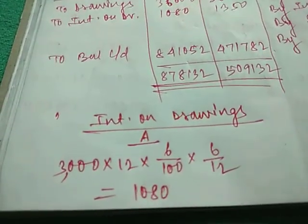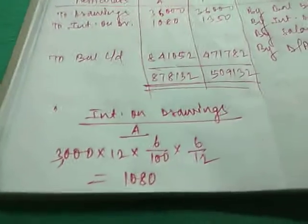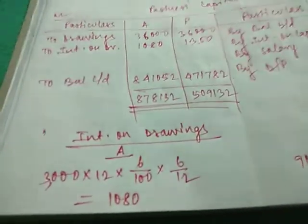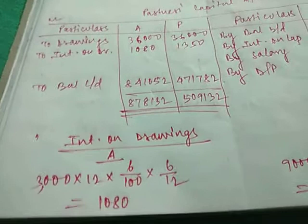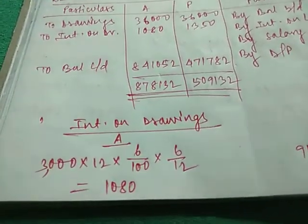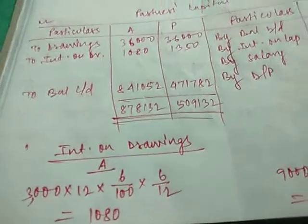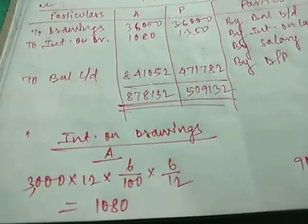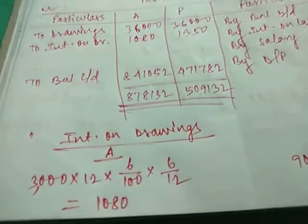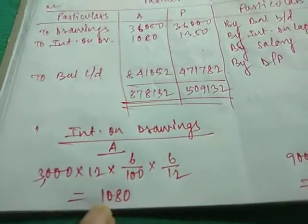I have provided one table for this at the very beginning when we have started our classes. Whenever we need to calculate the interest on drawings, we have to check whether it is beginning of the month, mid of the month, end of the month, or beginning of quarter, end of quarter, mid of quarter. Mid of the month is 6 by 12, beginning of month is 6.5 by 12, end of the month is 5.5 by 12. So 3000 into 12 into 6 by 100 into 6 by 12 will give us 1080 for A.